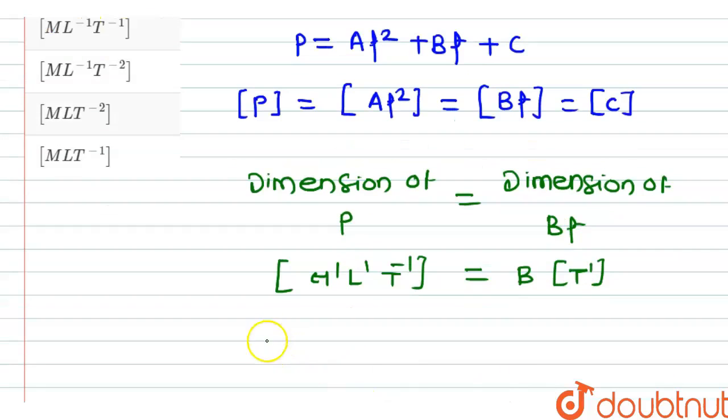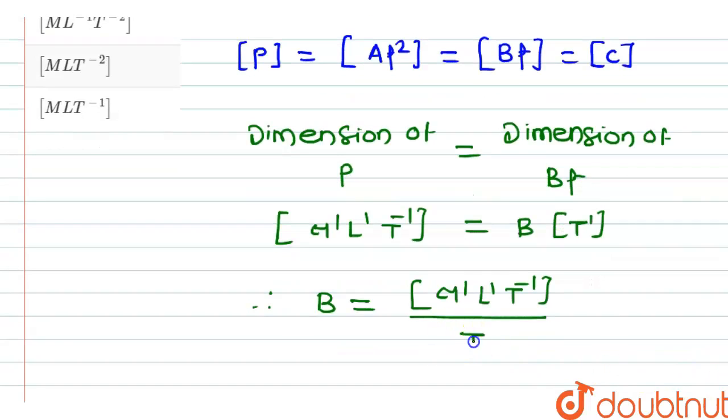So here dimension of b will be equal to dimension of p, that is m1, l1, t minus 1, divided by t1.